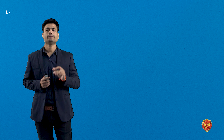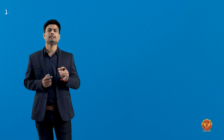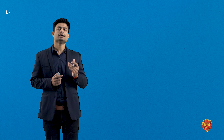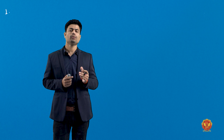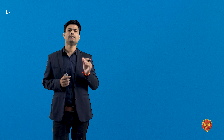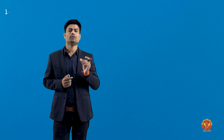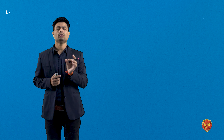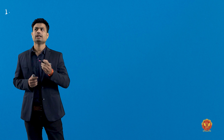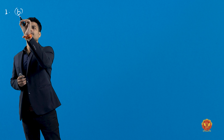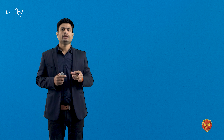Option B describes the double vernier: it consists of two simple verniers placed end-to-end forming one scale with the zero in the center. So in a double vernier, both sides have a scale and they extend outward. Therefore option B is the correct answer here.